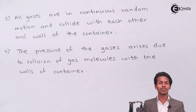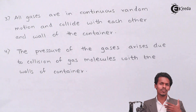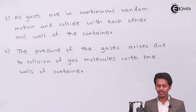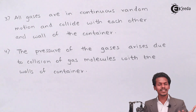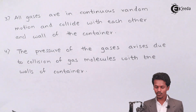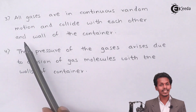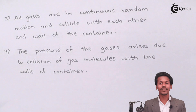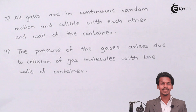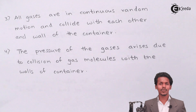The third postulate is that all gas molecules are in continuous random motion and collide with each other and with the walls of the container. This is because gas molecules have no intermolecular forces of attraction and the distance between molecules is very large, making them very far apart. This allows gas molecules to move freely in random motion inside a container or in the environment, colliding with each other and with the container walls.